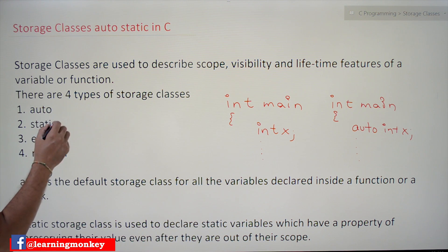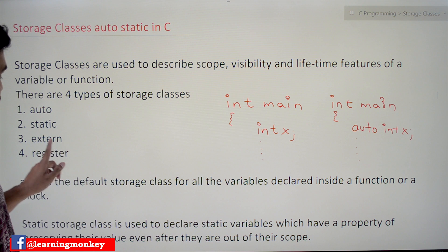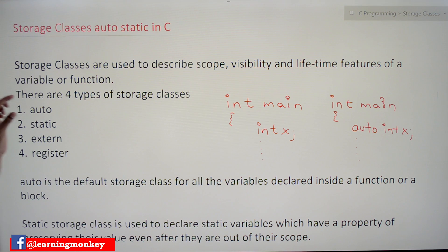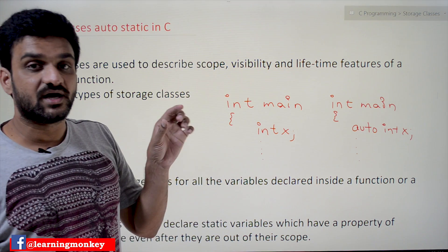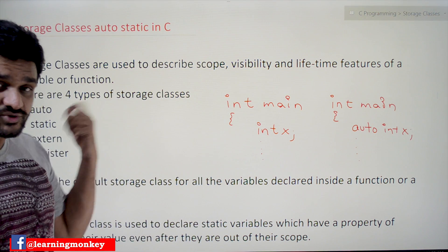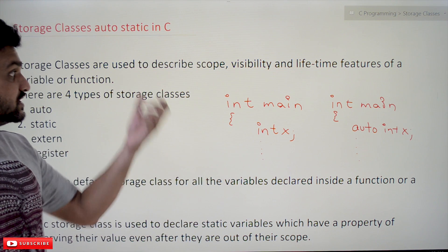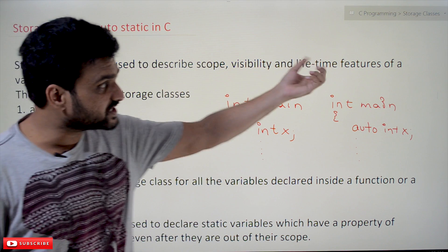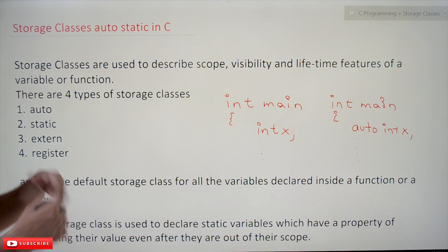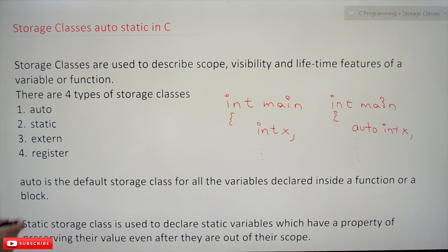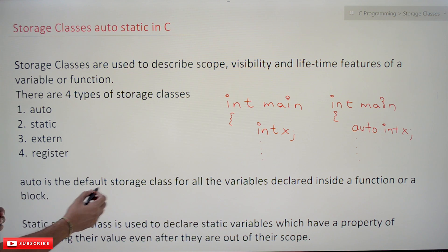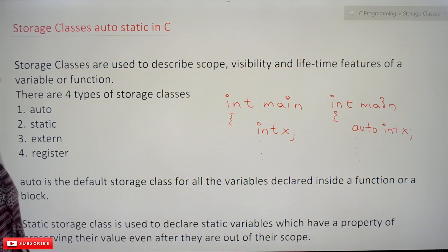In this class we will discuss auto and static; in the next class we will discuss external and register. These storage classes are going to describe the scope, visibility, and lifetime of a variable. Coming to the first one: auto is the default storage class for all variables declared inside a function or a block.